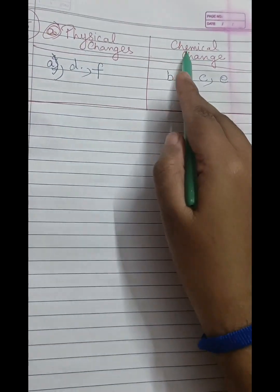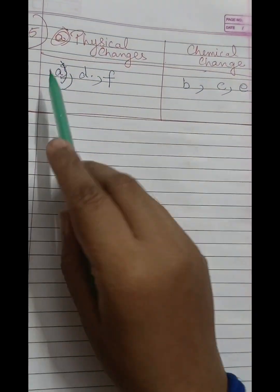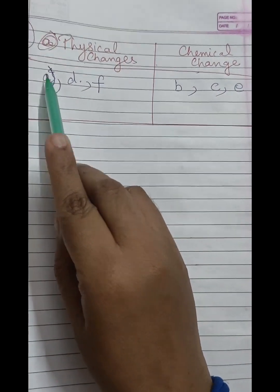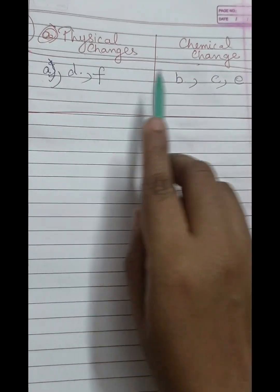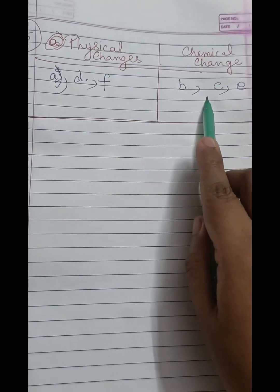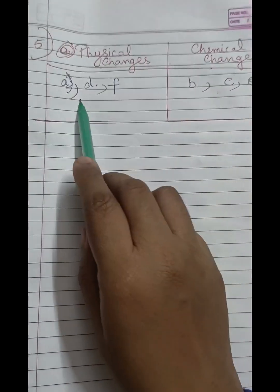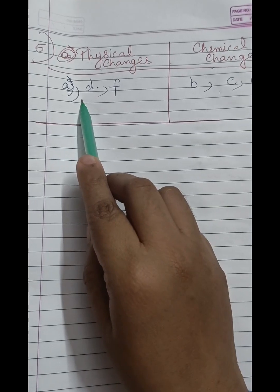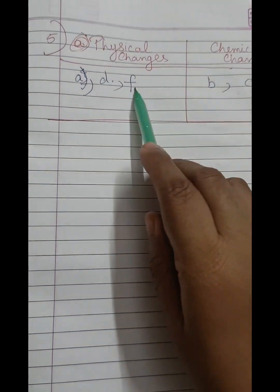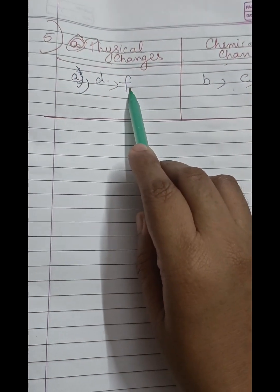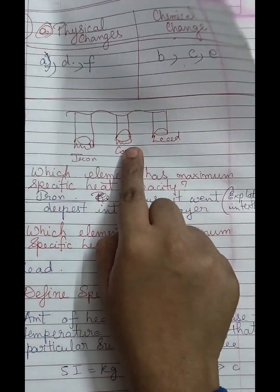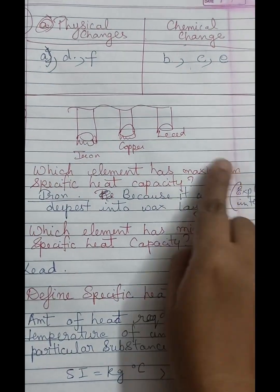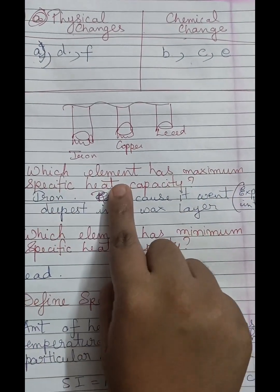Physical change vs. chemical change: transformation of ice into water is physical, ripening of fruit is chemical, milk changing into curd is chemical, evaporation of water is physical, digestion of food is chemical, and iron filings getting attracted to a magnet is physical.